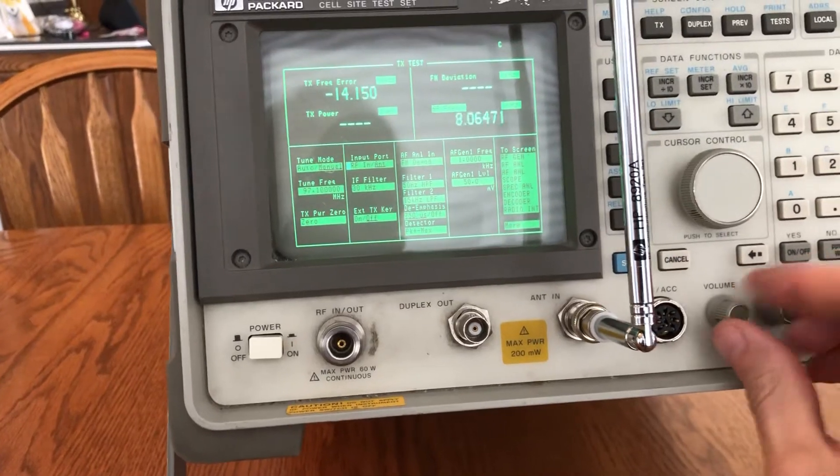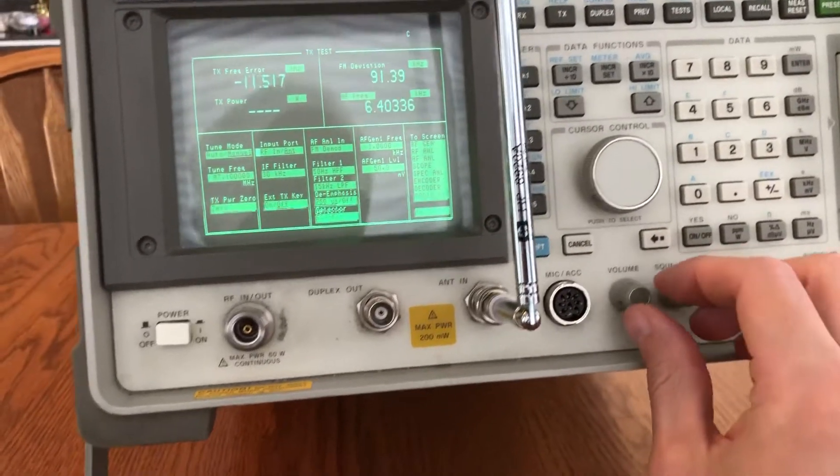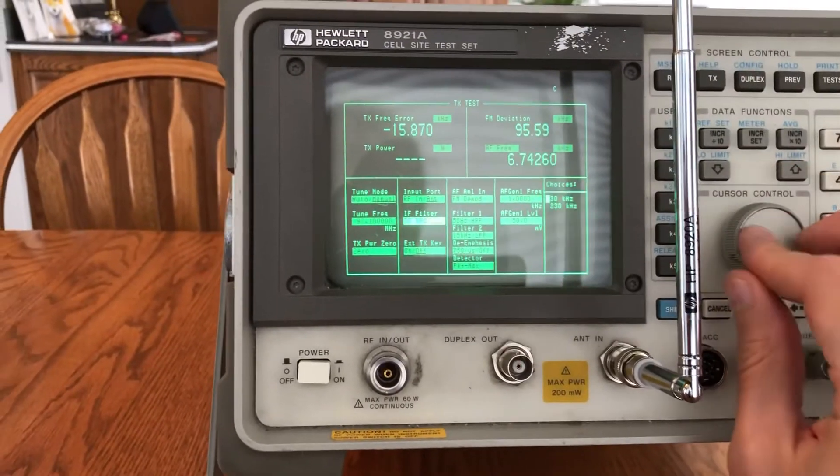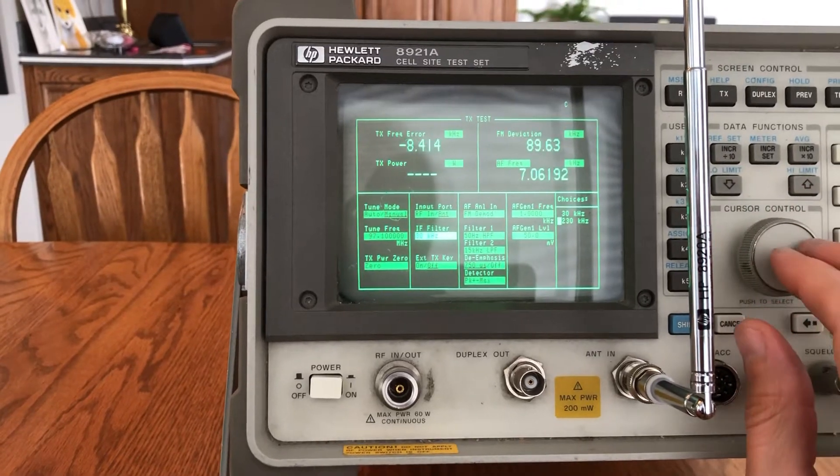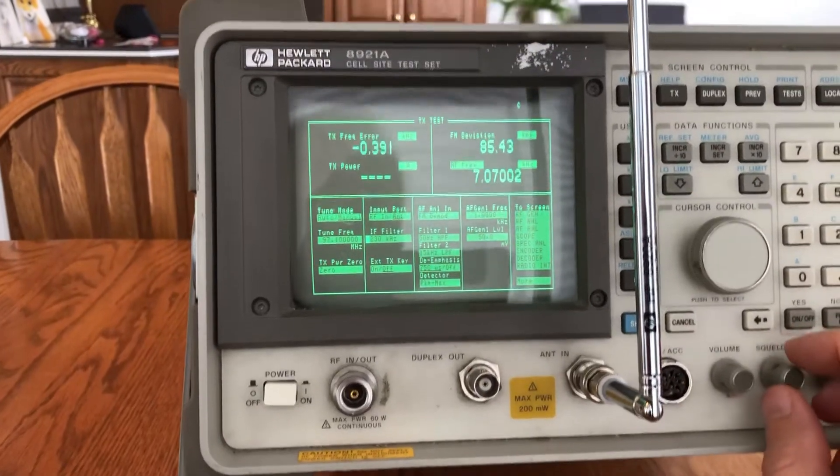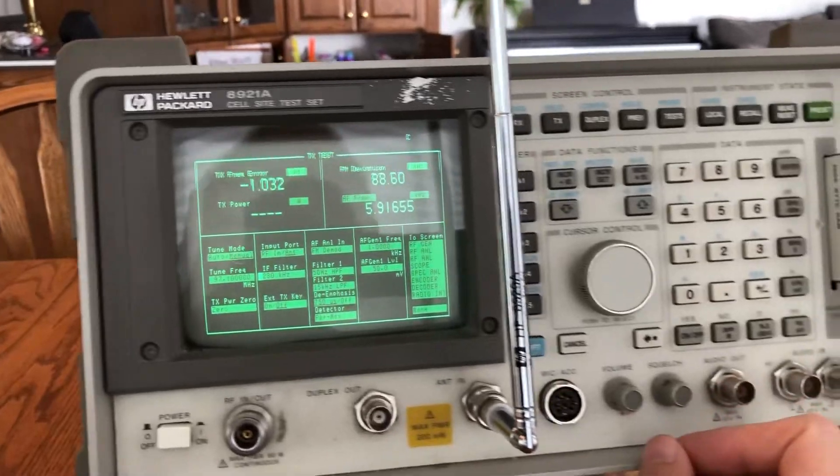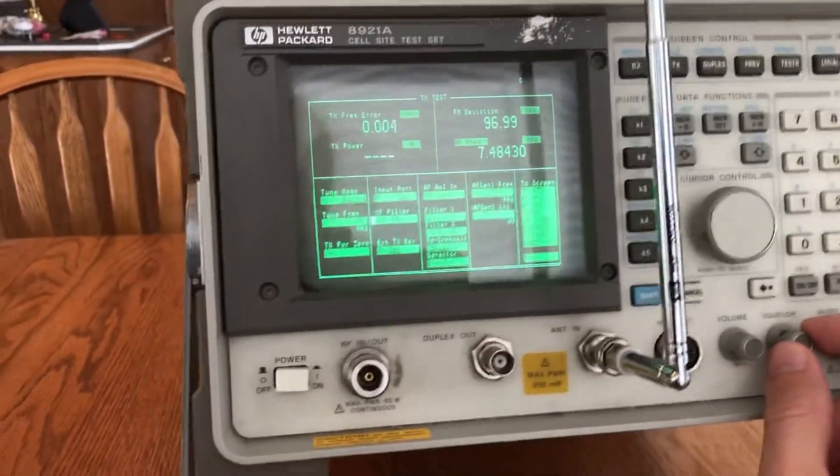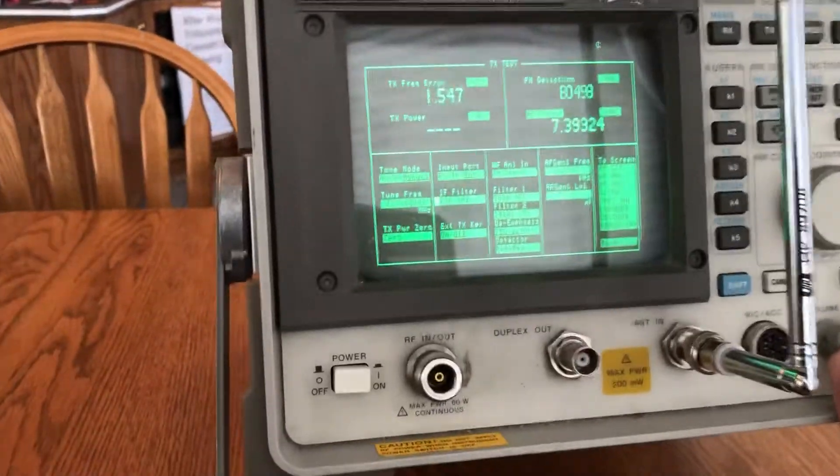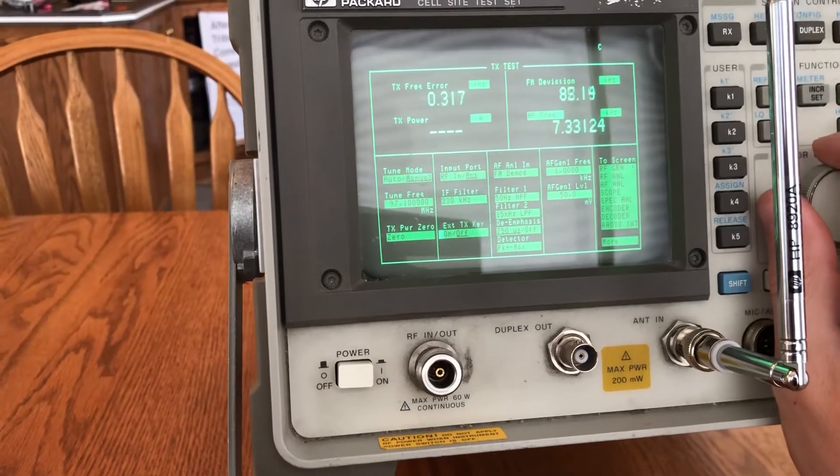So when I put the squelch in the volume, it kind of sounds like garbage. Well, change the IF filter. There we go. Sound volume up, and then we can do one another change here.